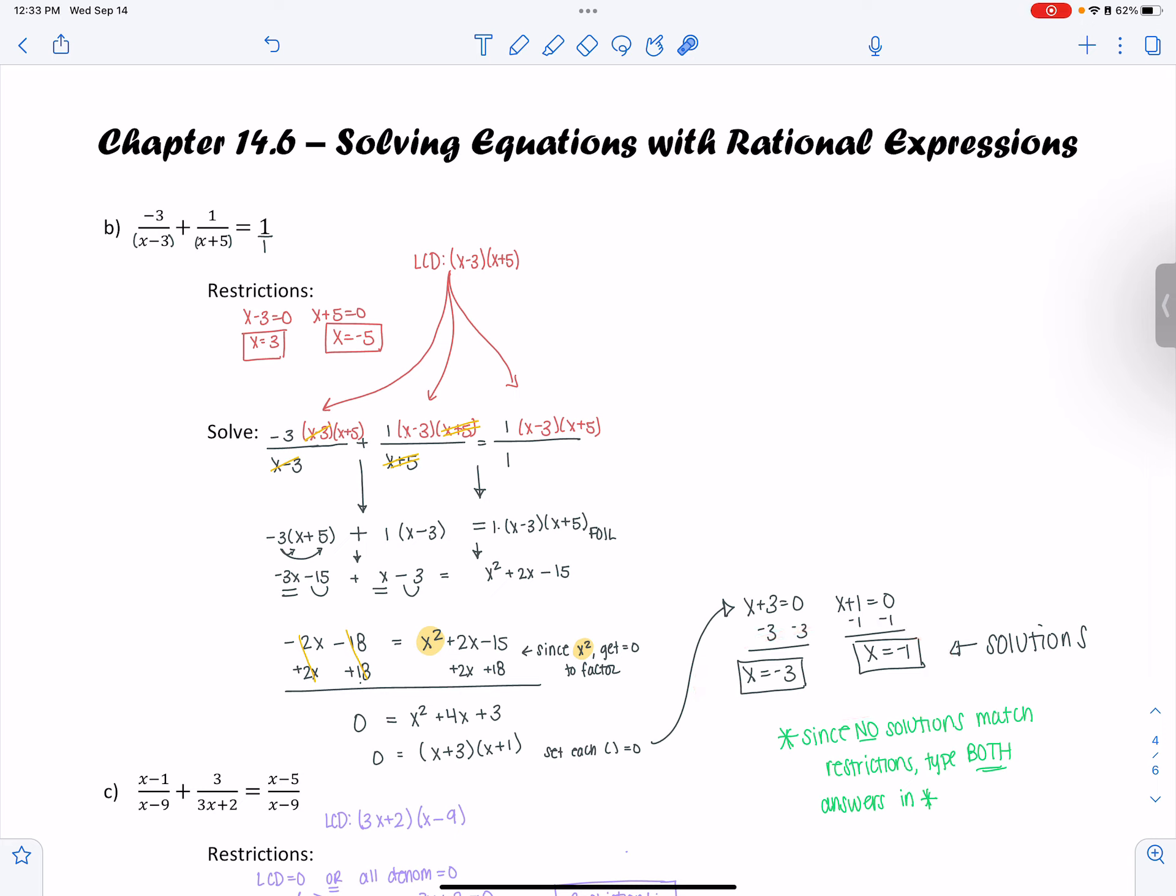So since there are no restrictions that are also solutions, I do not throw out any solutions. I keep both the restrictions and both the solutions. Yes, 3 and negative 3 are similar, but they are not exactly the same.